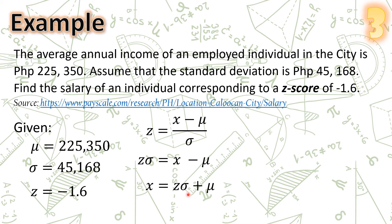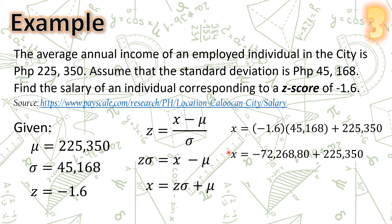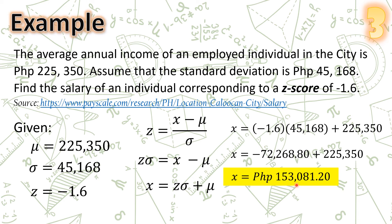Substituting the given values: x = (−1.6)(45,168) + 225,350. Negative 1.6 times 45,168 is −72,268.8. Adding 225,350, the annual income of an individual with a z-score of −1.6 is P153,081.20.